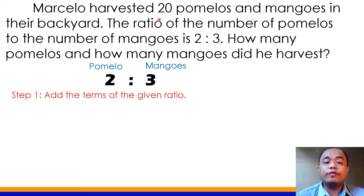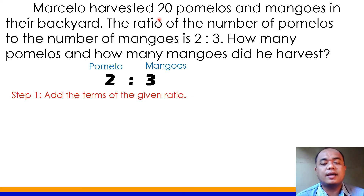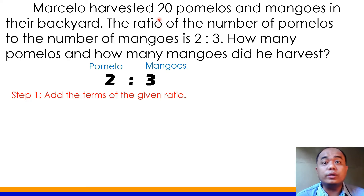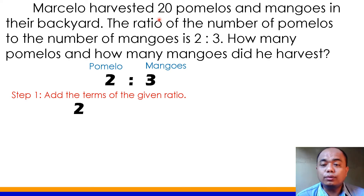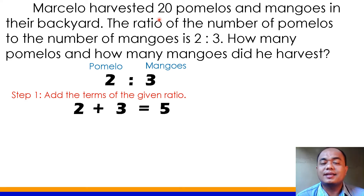Para malaman kung ilan talaga ang pumelo at mangoes, gagamitin natin yung steps. Number 1: add the terms of the given ratio. Ano nga yung ratio? Yes, yung 2 is to 3. So i-add natin: 2 plus 3 equals 5. That's the first step.